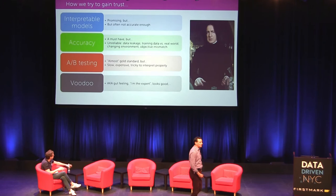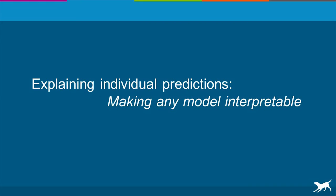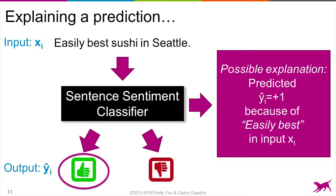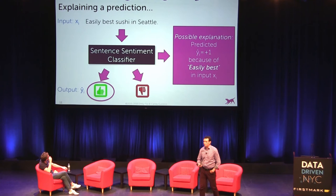Can we do something better? Our idea is to make machine learning models more interpretable and explain the predictions of any model — even a complicated neural network. So here's the idea: let's say you have an input like 'easily the best sushi in Seattle,' and you build a classifier to figure out whether this is a positive or negative sentence. Clearly it's positive. And I ask you why. You can say things like 'easily' and 'best' are associated with positive sentiment. You can find some way to transparently explain why a prediction is being made, and then you can begin to gain confidence and find places where the model is doing bad things.